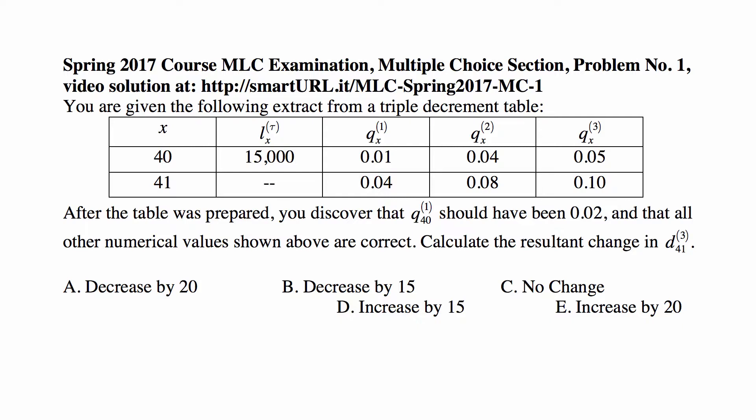But after this table was prepared, you discovered that Q41 superscript 1 should have been 0.02, not 0.01 as it is now, and that all other numerical values shown above are correct. Calculate the resultant change in D41 superscript 3.